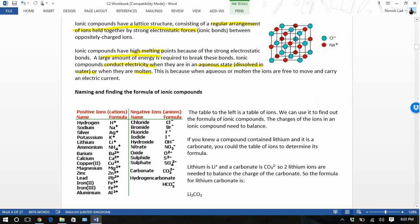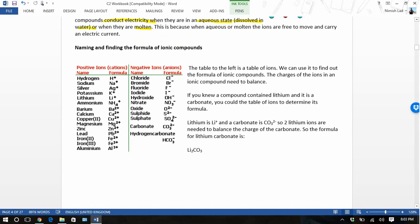So let's talk about naming some of these compounds. This table is a table of ions. This is given to you in the exam. We can use it to find out the formula of some ionic compounds. When the charge of ions, the ionic compounds need to balance. So you need to have the same charge on each side. If you knew a compound contained lithium and it's a carbonate, you can use a table of ions to determine its formula. Lithium is plus one. Carbonate is minus two. So you're going to need to get two pluses to cancel out that carbonate. So it'll be Li2CO3.